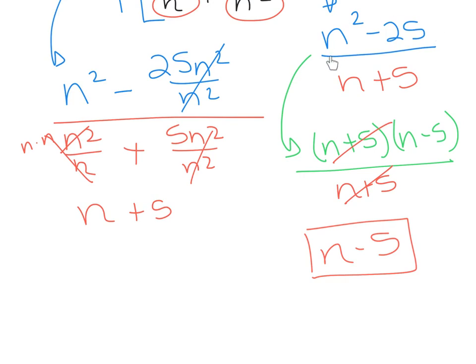After you've done the multiplication and reducing, you need to look at factoring to see if it's logical and whether anything will reduce. That's how we ended up with just N minus 5.